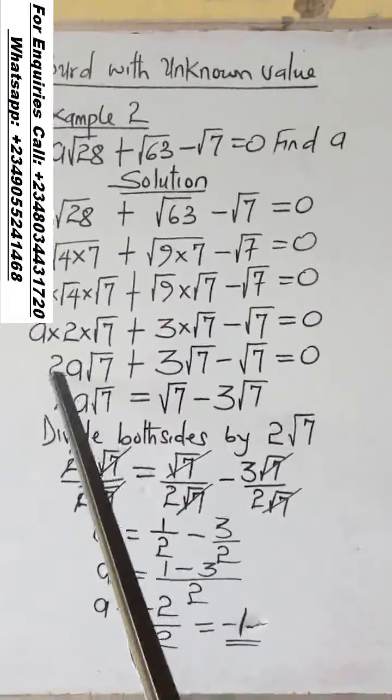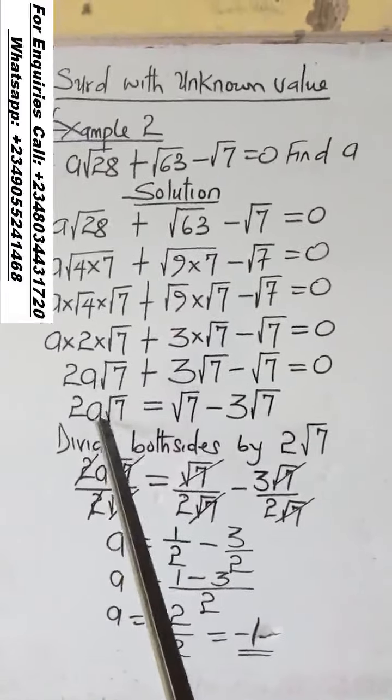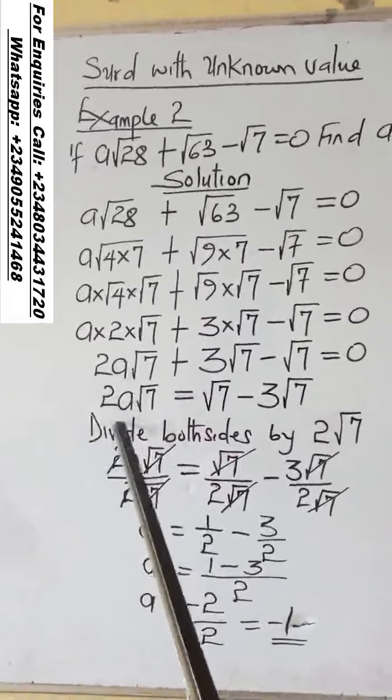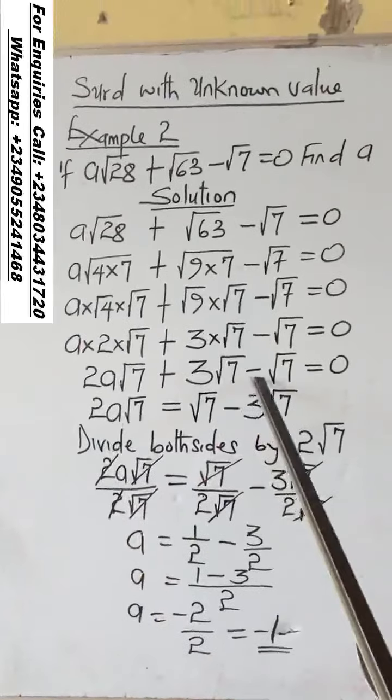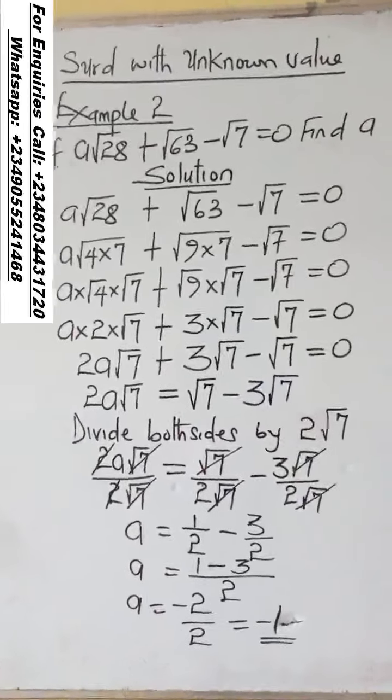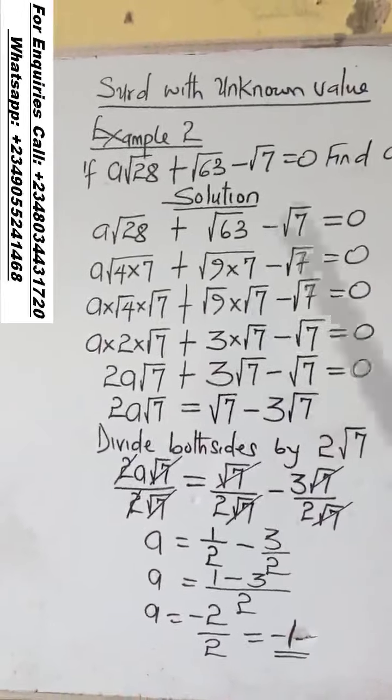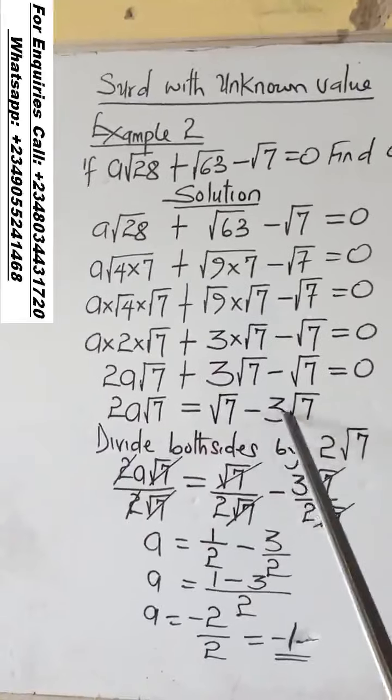So you can make 2A root 7 subject of the formula because we are looking for A. Minus root 7 will go to the right, it will be plus root 7. Plus 3 root 7 will go to the right, it will be minus 3 root 7.